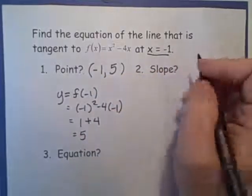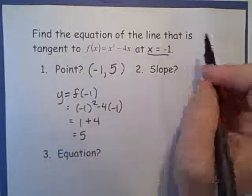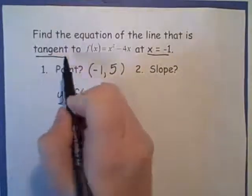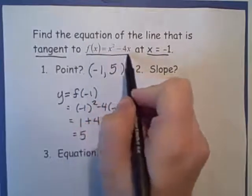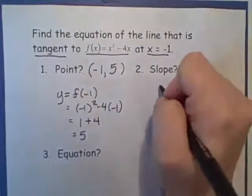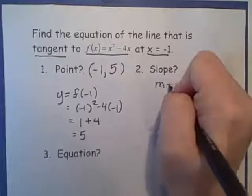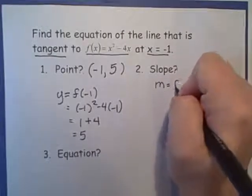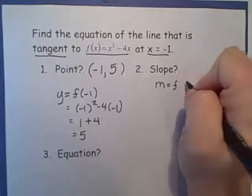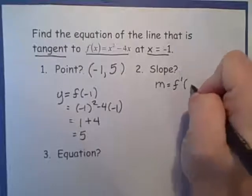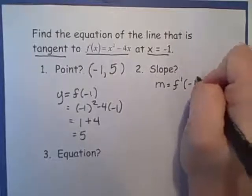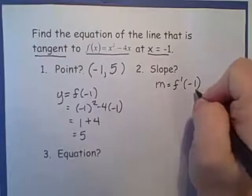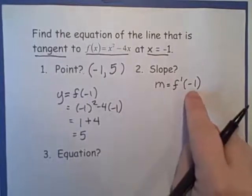Now next, our slope. Our line is supposed to be tangent to f of x equals x squared minus 4x. That means the slope of our line is the slope of the tangent line, which is f prime at negative 1. Notice I don't have x here. I have our derivative at negative 1.